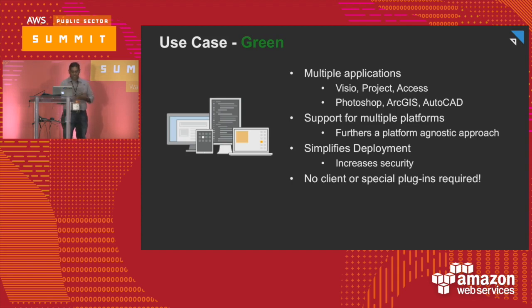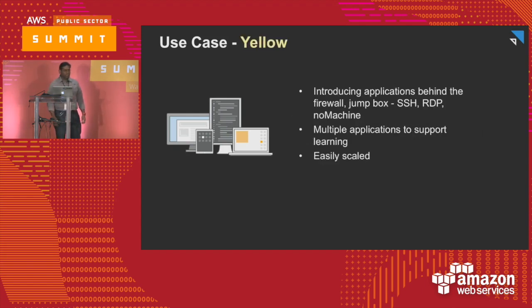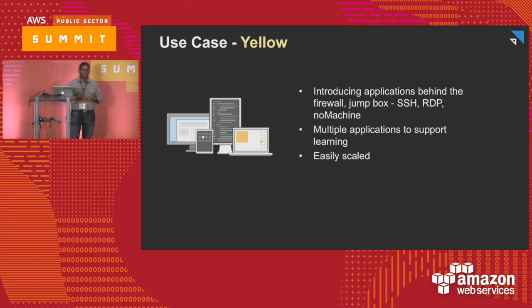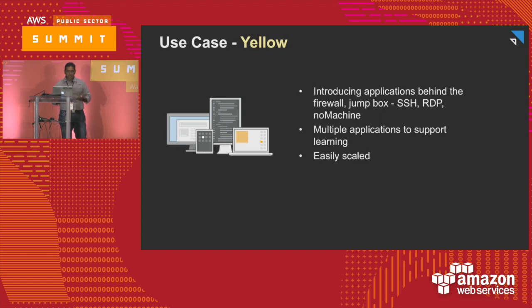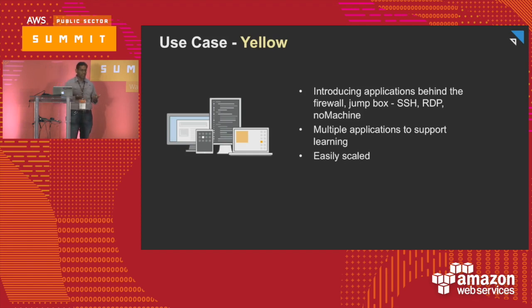Having this be HTML5 streaming is great. The next step we're thinking about is using AppStream to access internal services within your network — think of it as a jump box or VPN gateway. Multiple applications, scales very easily for all your users, and it's simply a matter of building an AppStream stack, deploying it, and giving access to your users.